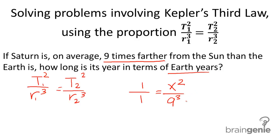Once we go ahead and solve this proportion, we get X equals the square root of nine cubed, and that gives you an answer of 27. So it's 27 Earth years, and that's how long a year for Saturn is.